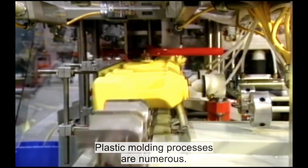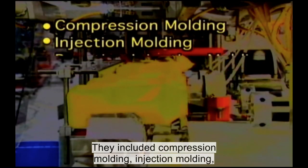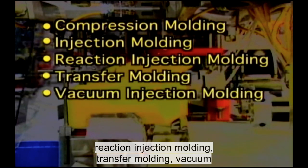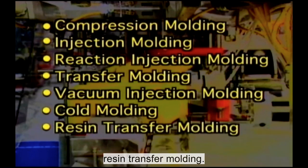Plastic molding processes are numerous. They include compression molding, injection molding, reaction injection molding, transfer molding, vacuum injection molding, cold molding, and resin transfer molding.